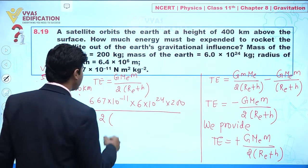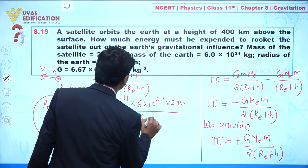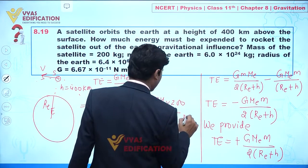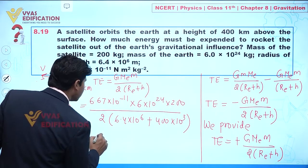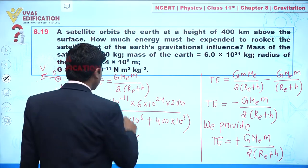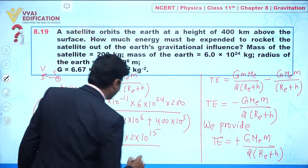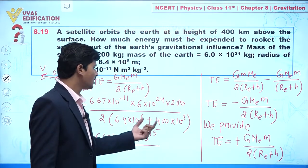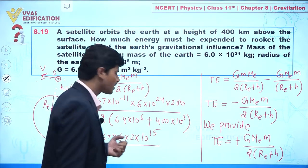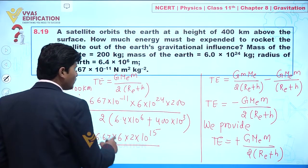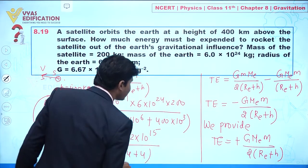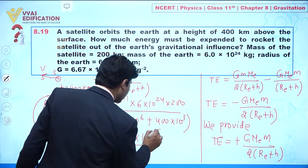The radius of Earth Re is 6.4 × 10⁶ m, and h is 400 km = 400 × 10³ m = 4 × 10⁵ m. In the denominator, we have 2 × (6.4 × 10⁶ + 4 × 10⁵). Taking 2 × 10⁵ as common, we get 2 × 10⁵ × (64 + 4) = 2 × 10⁵ × 68.